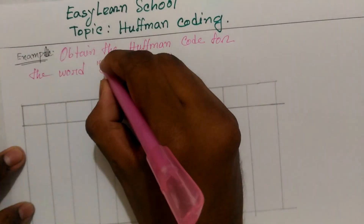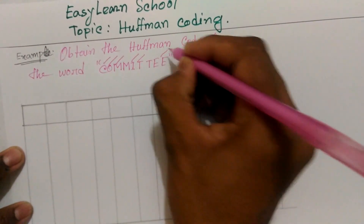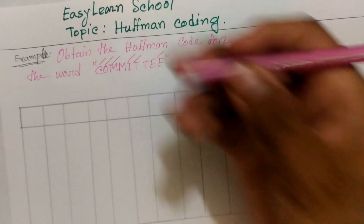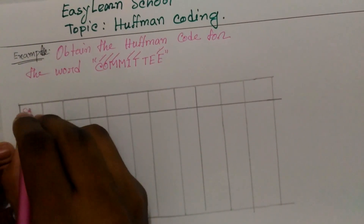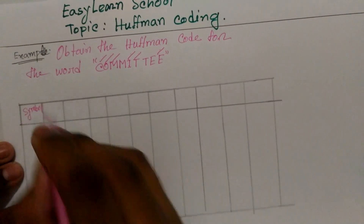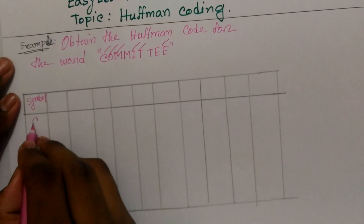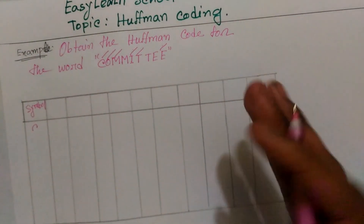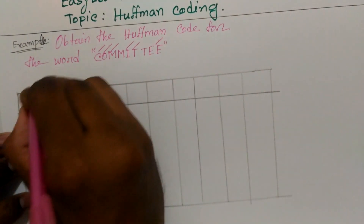The alphabet is C, O, M, I, T, E — 1, 2, 3, 4, 5, 6. Here I am going to find out the number of symbols. The total number of symbols is 6, and the number of symbols is 1.